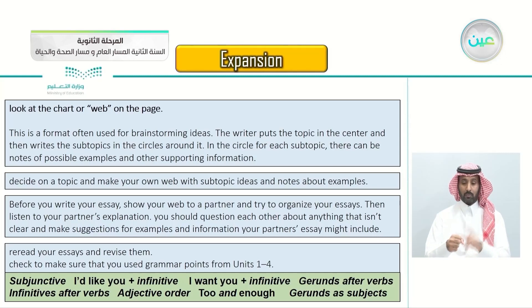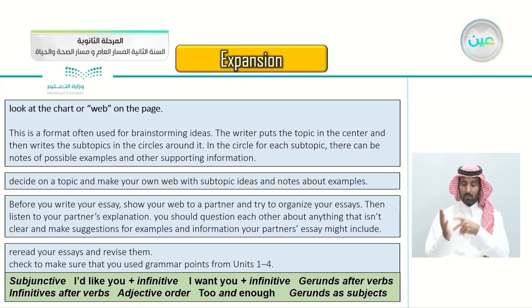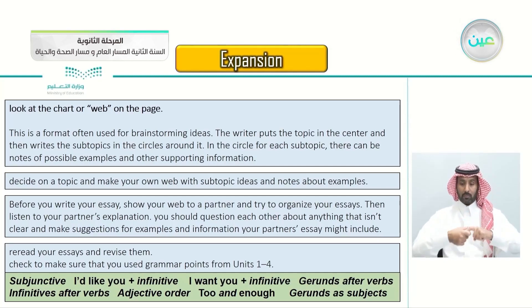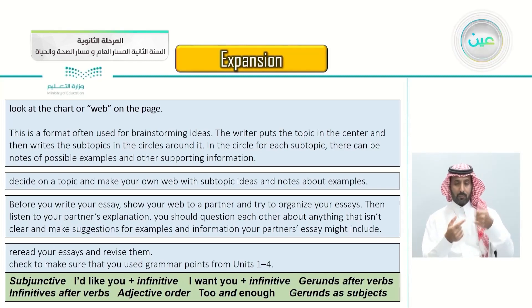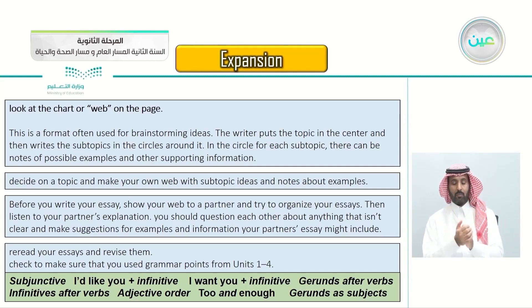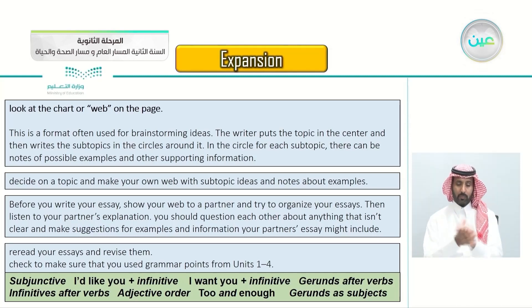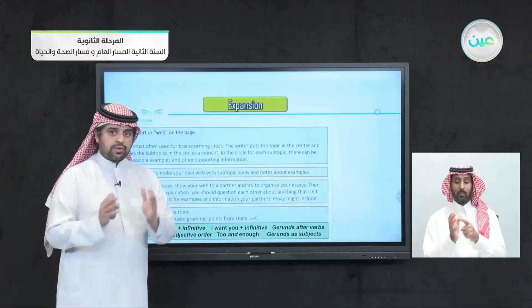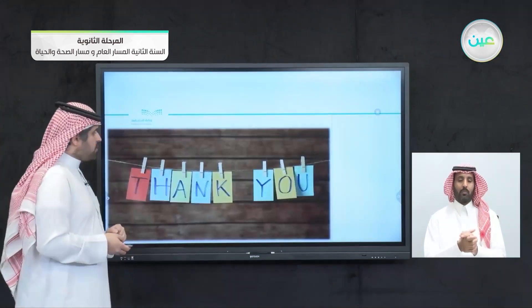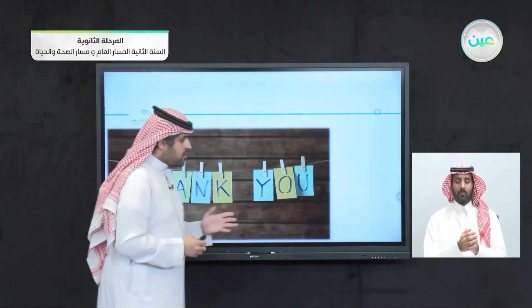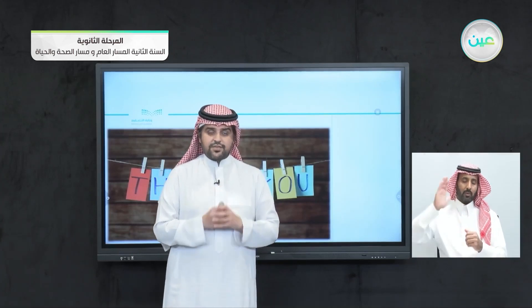Make suggestions for examples and information your partner's essay might include. Re-read your essays and revise them. Check to make sure that you used grammar points from units 1 to 4 - for example, the subjunctive, 'I'd like you' plus the infinitive, 'I want you' plus the infinitive, gerunds after verbs, infinitives after verbs, adjective order, 'too' and 'enough,' gerunds as subjects, and the whole grammar for units 1, 2, 3, and 4. And with that, we reach the end of this lesson. See you next lesson, in sha Allah.